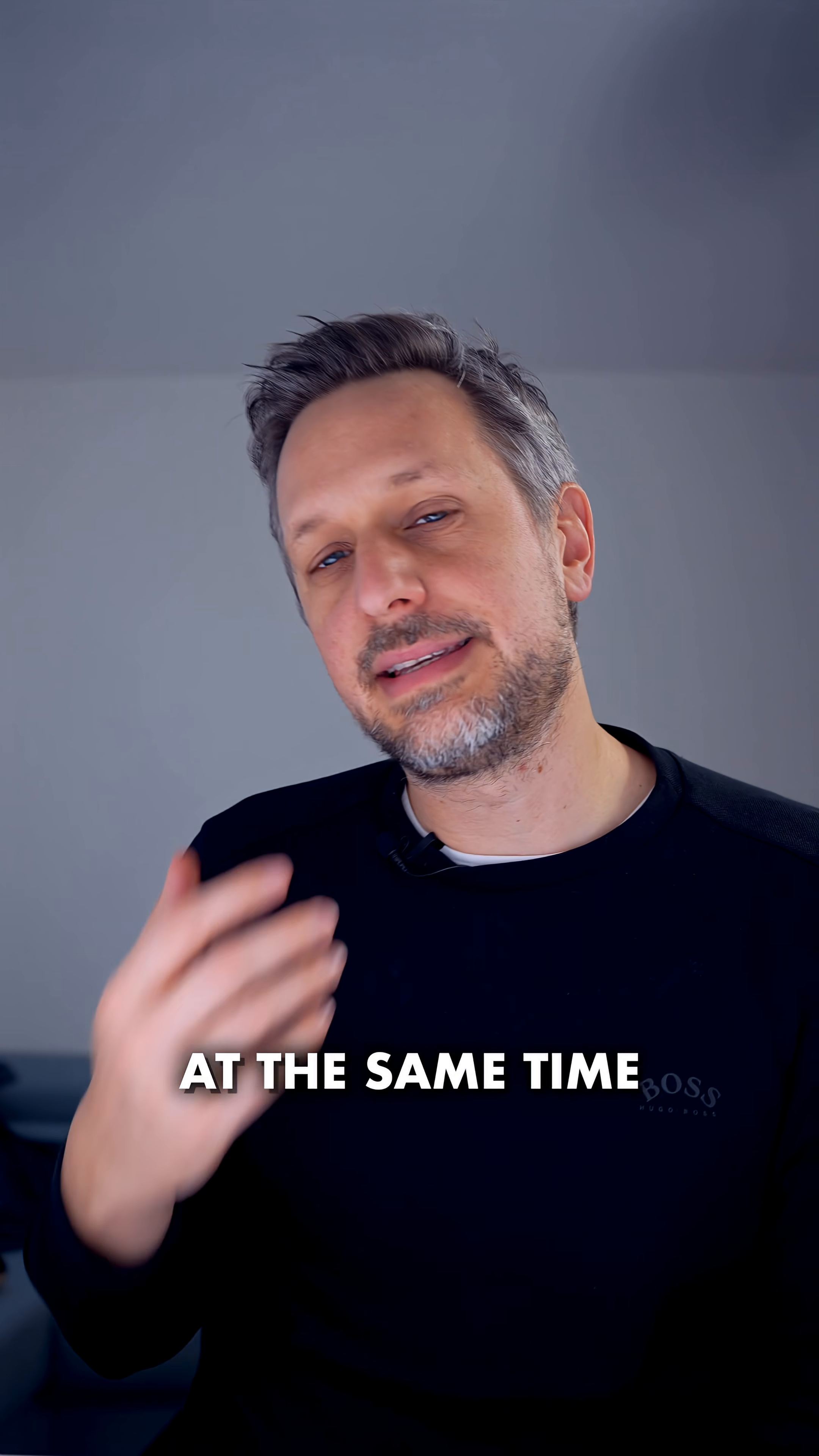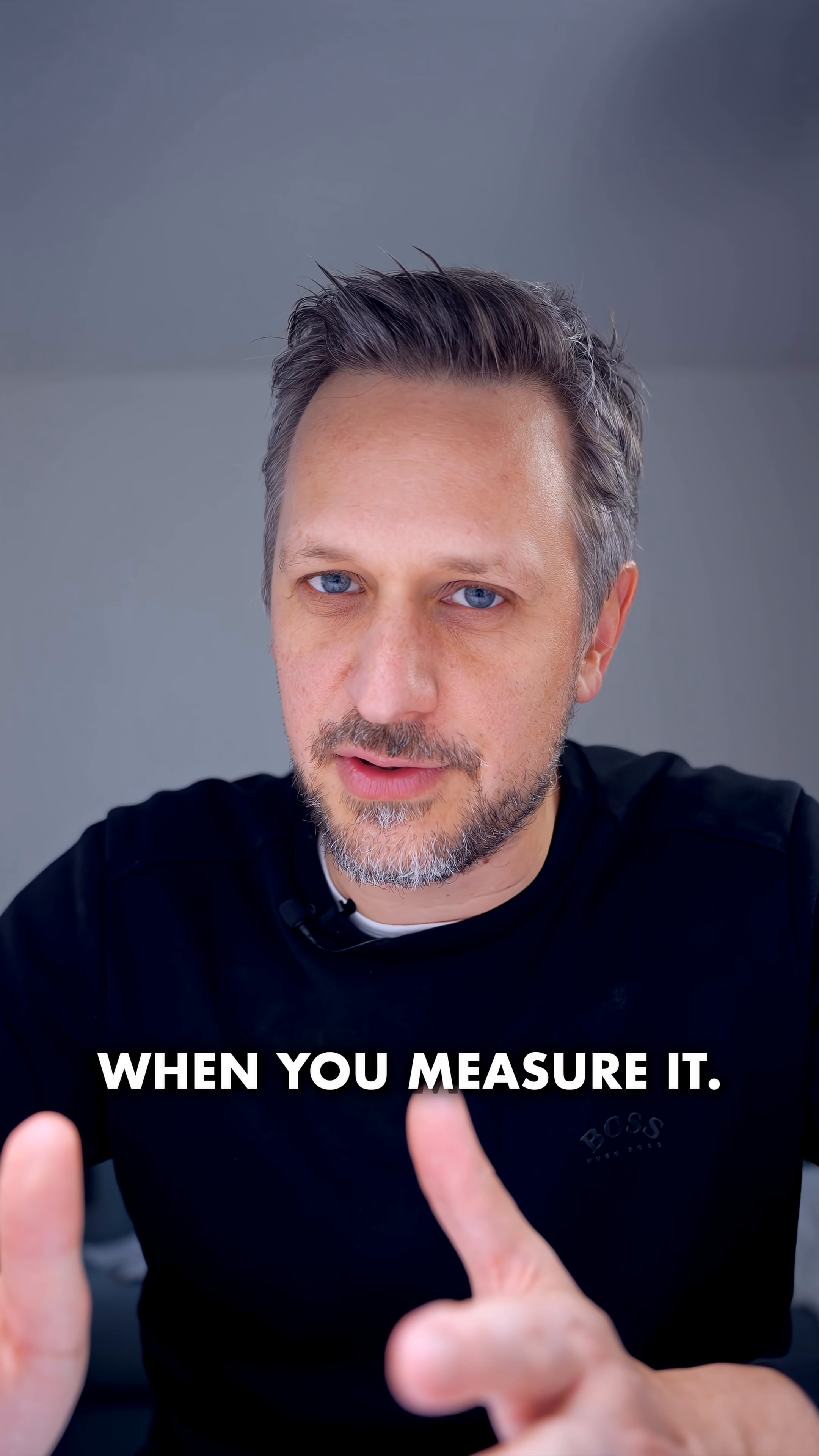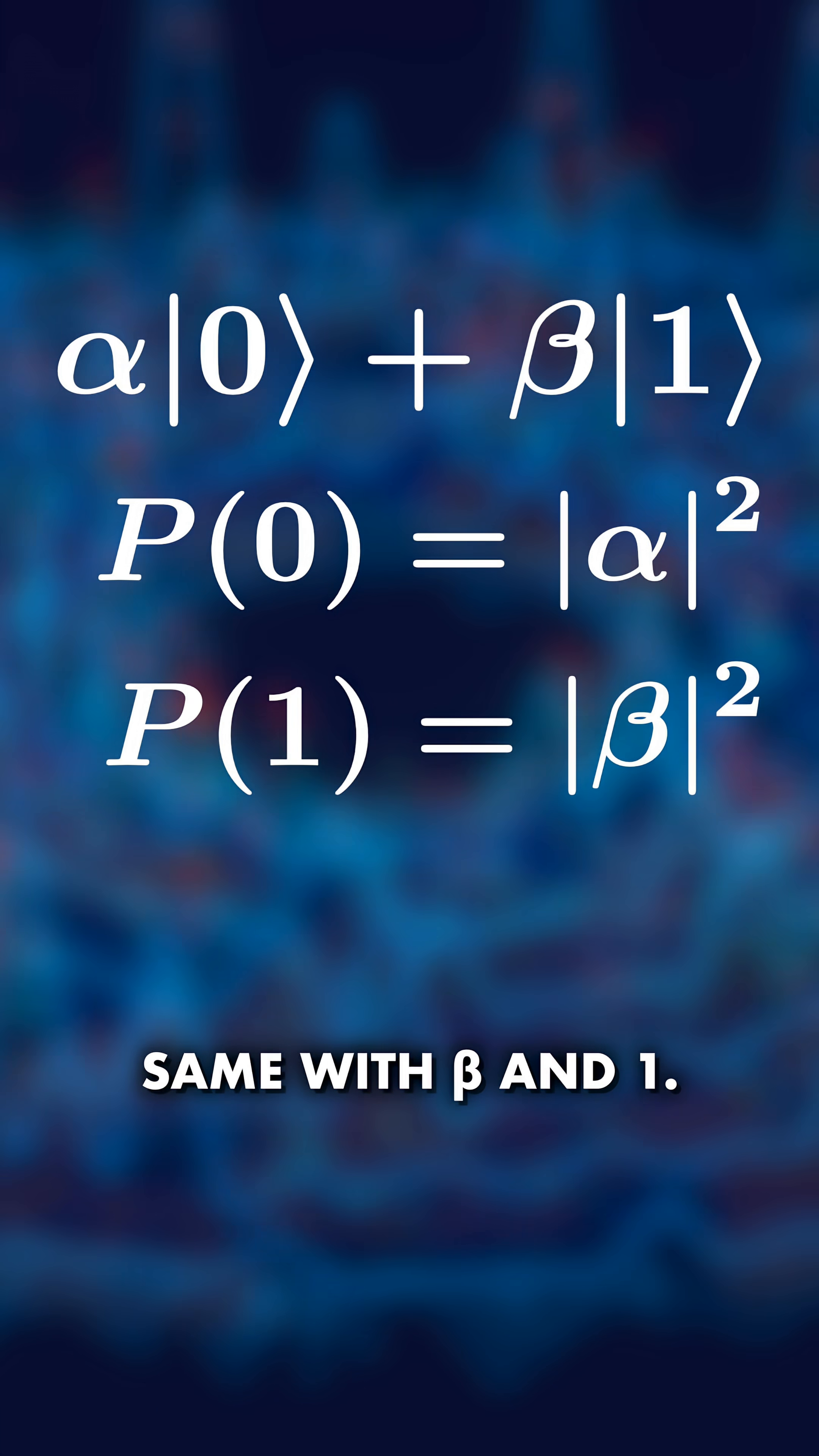A qubit being zero and one at the same time actually means that you can get zero or one when you measure it. And the length gives you the probability. Norm square of alpha is the probability to get zero, and the same with beta and one.